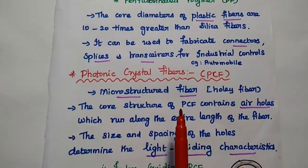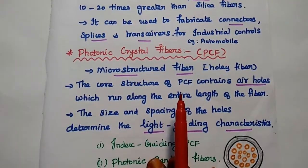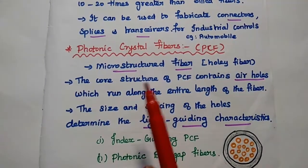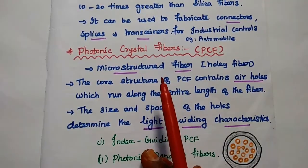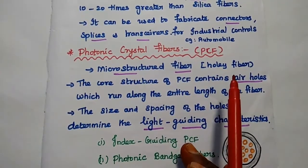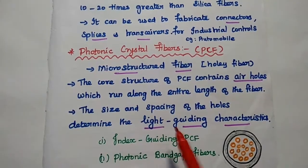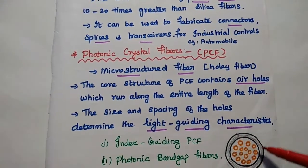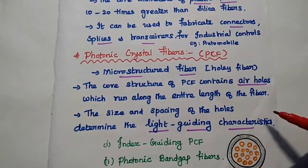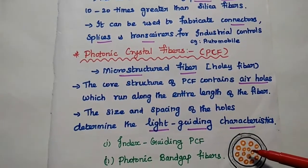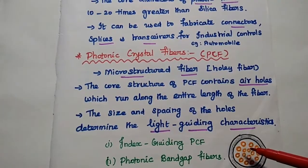The next one is photonic crystal fibers, simply PCF. So in this photonic crystal fibers, we are going to use microstructured fiber, that is hole-like fiber. So here the core structure of the PCF contains air holes which run along the entire length of the fiber. So in this one, it contains air holes in the fiber structure.